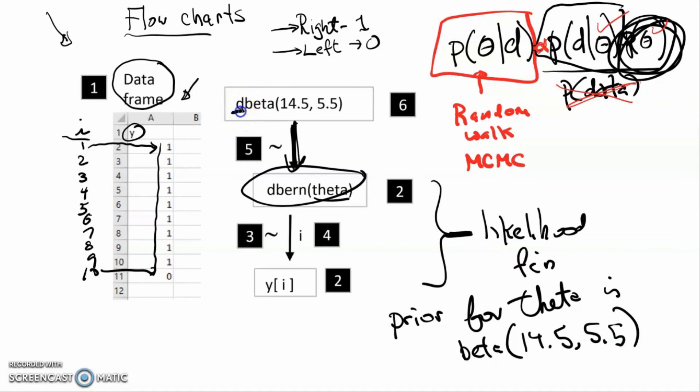When we actually write our code, we will be using things like d Bernoulli or d beta because those are the functions that are used to indicate probability density.